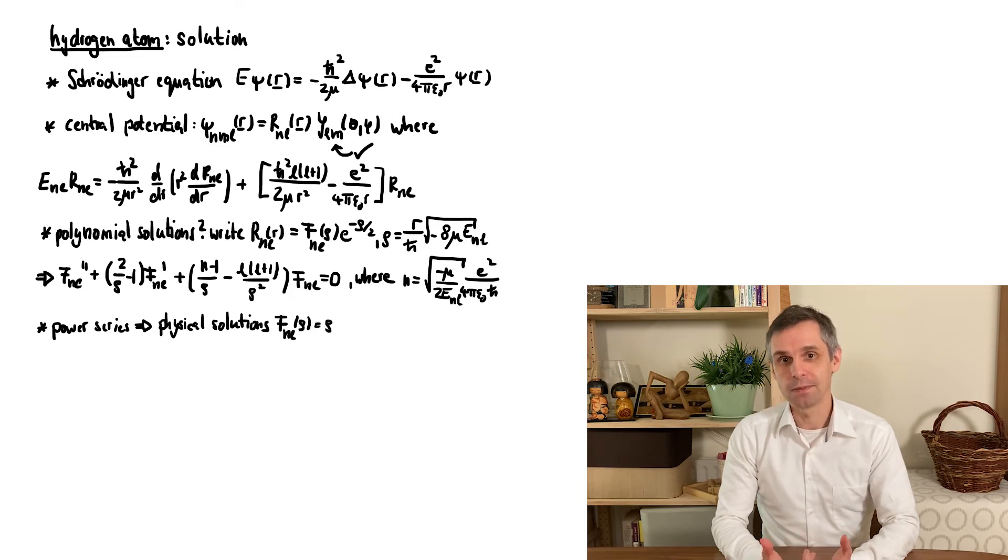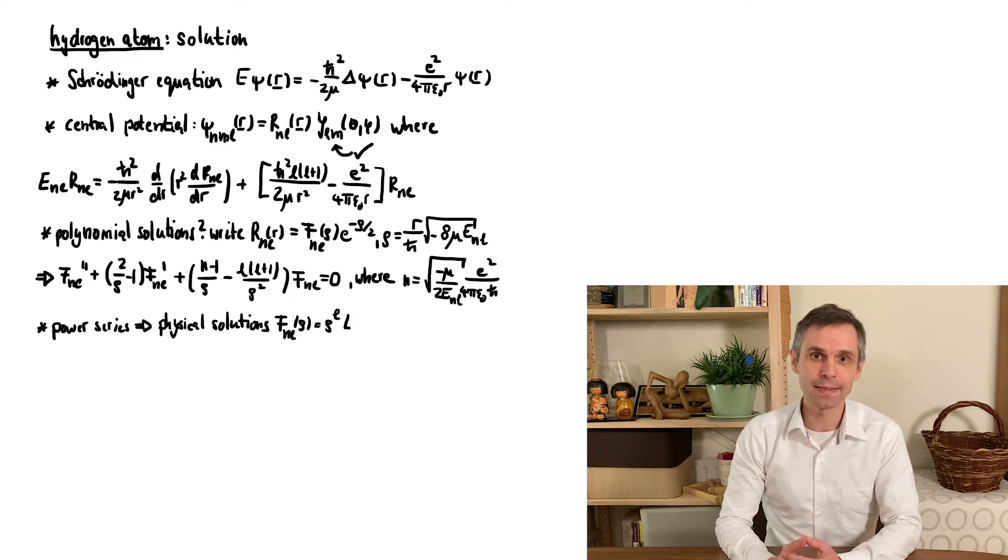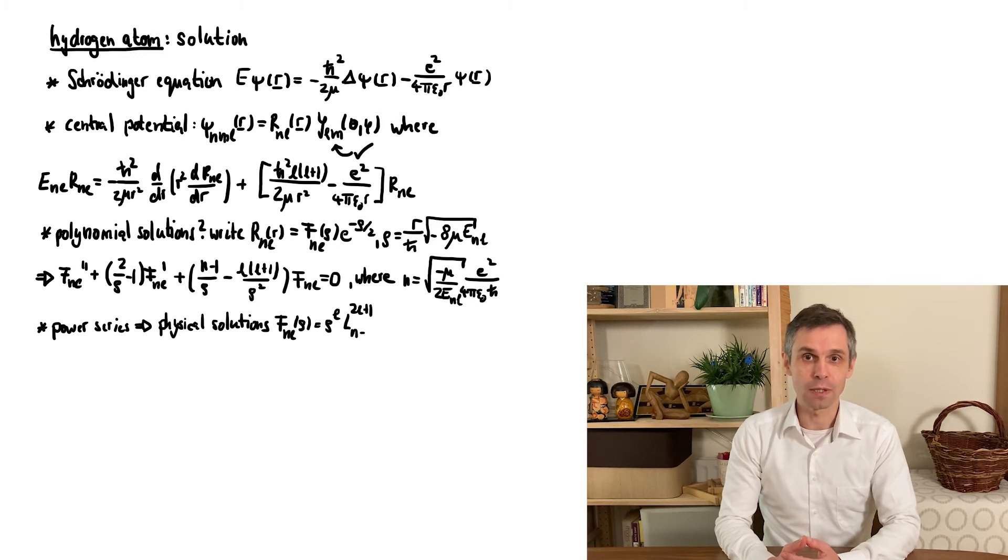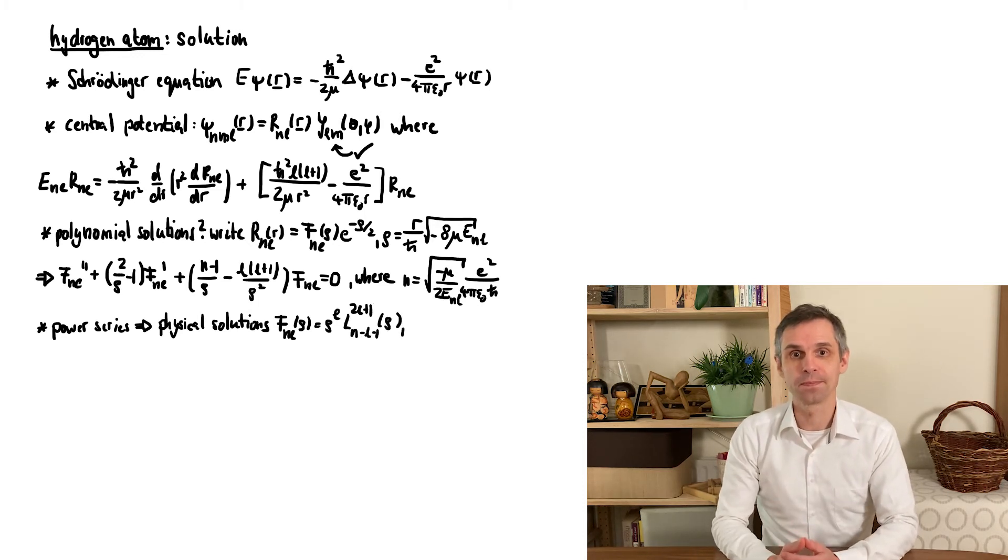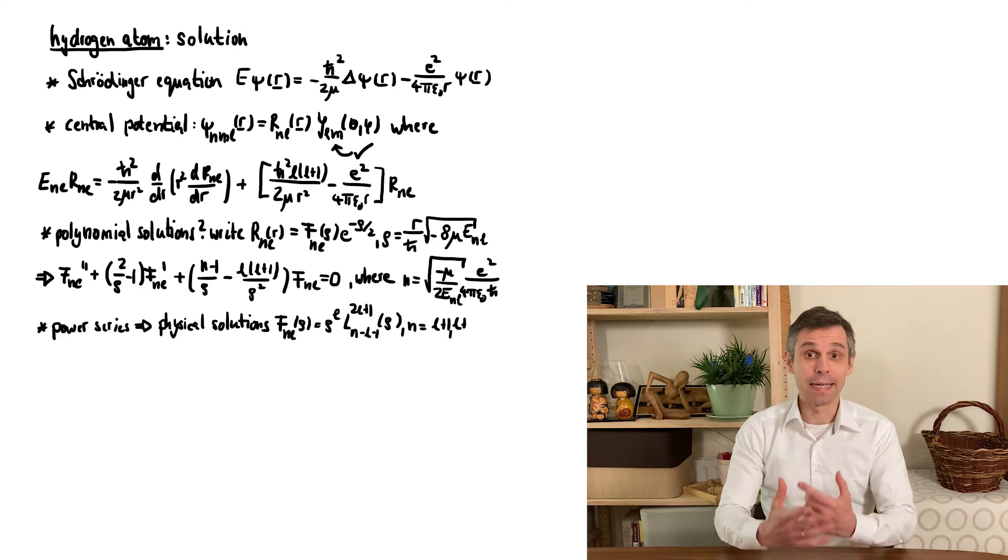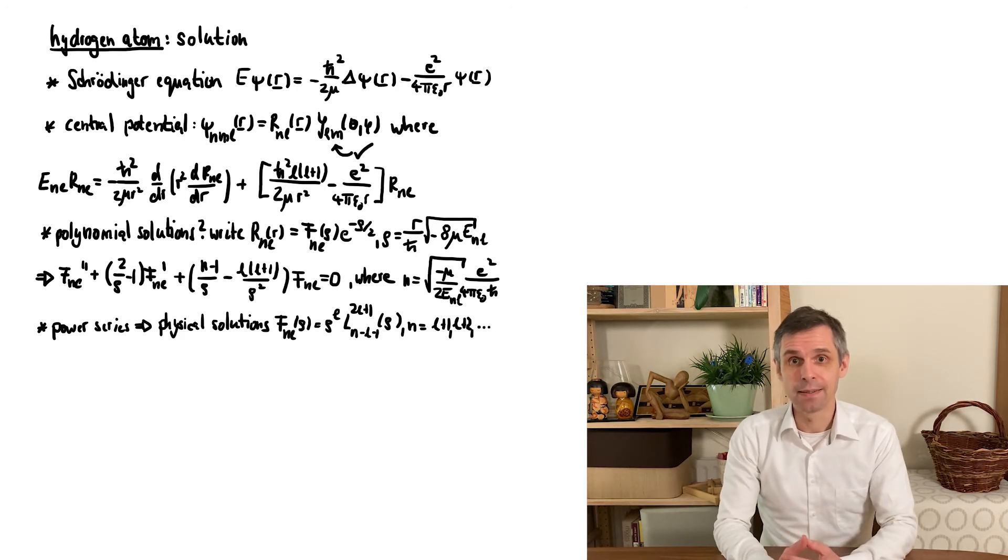If the series does not terminate, we find solutions that we cannot normalize, so we find ourselves restricted to polynomial solutions. These exist when n is an integer larger than l. So while we hadn't constrained n in any way before, this now has indeed changed.